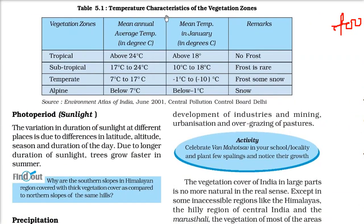Temperature characteristics of vegetation zones: tropical vegetation zone has temperature around 24 degrees, with January mean temperature around 18 degrees and no frost. Subtropical is 17 to 24 degrees with frost being rare. Temperate zone is 7 to 17 degrees with occasional frost and sometimes snow. Alpine zone is below 7 degrees with always snow.